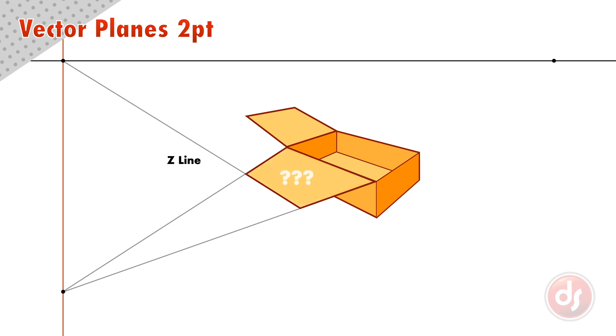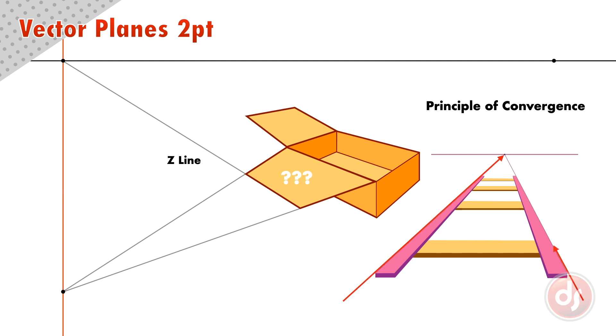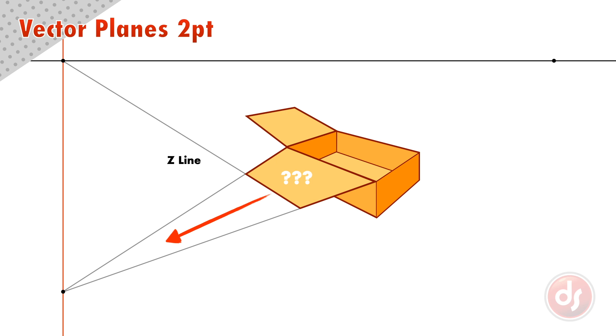If something looks off with this vector plane, remember the principle of convergence. If parallel lines move away from us, they converge at a point, but if they move towards us, they diverge or get farther apart. But this vector plane moves towards the viewer in space, so the lines shouldn't converge, they should diverge.